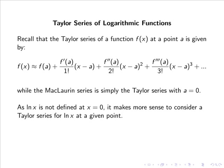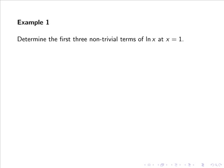As ln of x is not defined at x equals 0, it makes more sense to consider a Taylor series for ln of x at a given point. So let's determine the first three nonzero terms of ln of x at x equals 1. In this case f of x equals ln of x, and evaluating at x equals 1 we have f of 1 equals ln of 1, which equals 0.